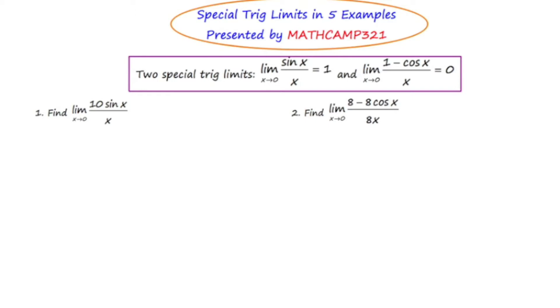The first thing is that for these special trig limits to work, x must be approaching 0, and that happens in both cases. So let's just highlight that. Both of these special trig limits, x equals 0.